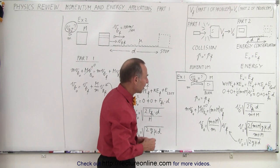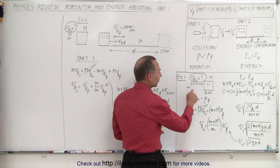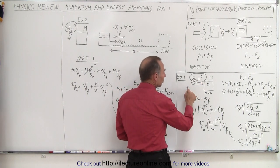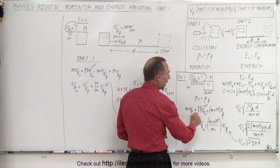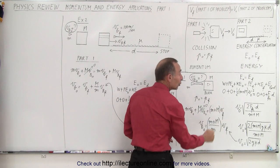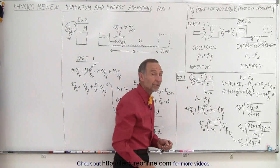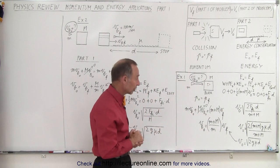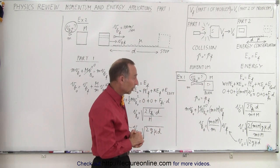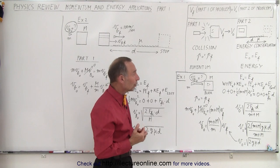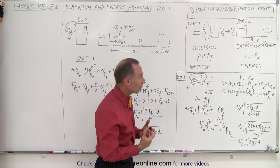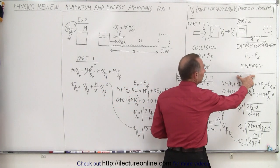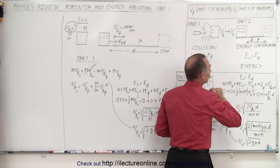But if they ask us to figure out the initial velocity of the bullet, we can't determine that yet because we don't know the final velocity of the block and bullet after the collision. So what we do is set up a second equation that keeps energy conserved.